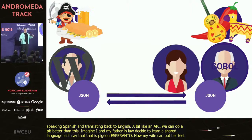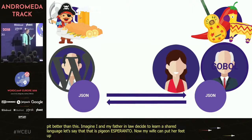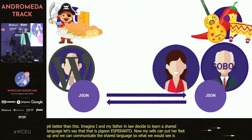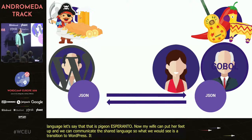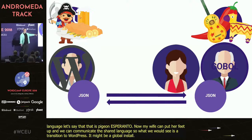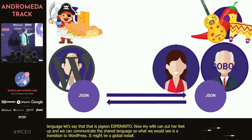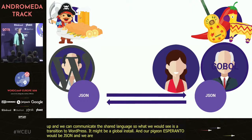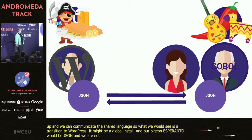What we'd see in the animated slide is a transition to WordPress — this might be a COBOL install, and of course our Pidgin Esperanto would be JSON. And we're not going to be talking about pirates and piñatas — we're going to be talking about user objects and legacy data tables and so on.